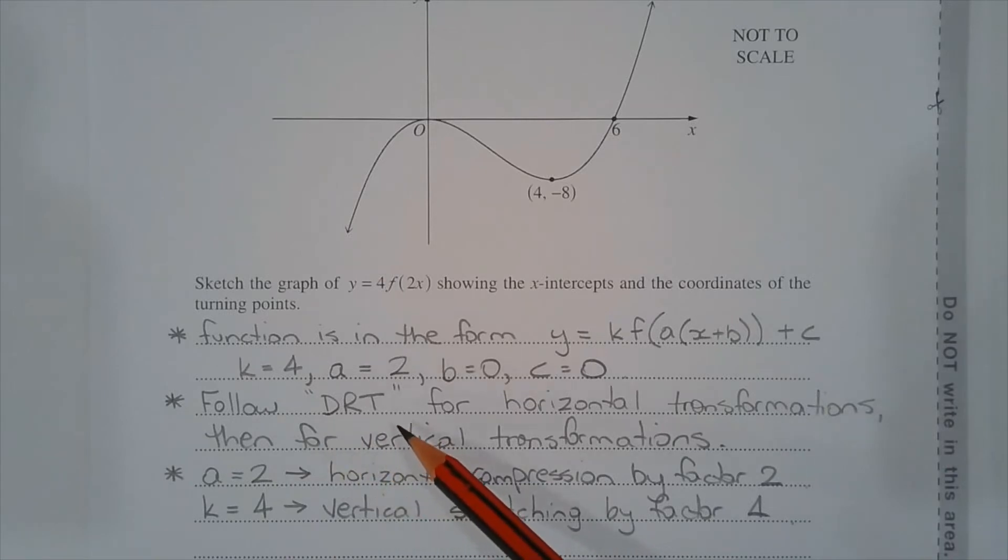Next we follow DRT, which means we consider the dilations first, then the reflections and then the translations for horizontal transformations and then for vertical transformations. Given that b equals 0 and c equals 0, there's no translations.